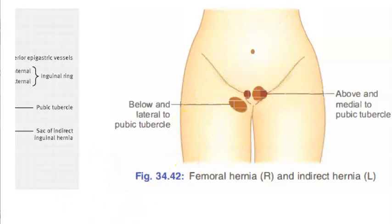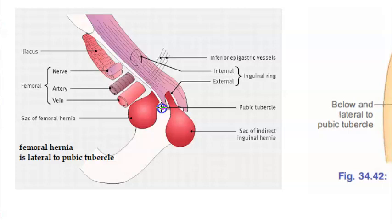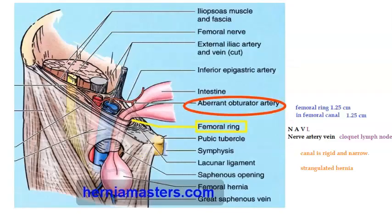Looking at this next image, the pubic tubercle is marked. The inguinal hernia is medial, and the femoral hernia is lateral — the lateral one will be the femoral hernia.